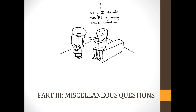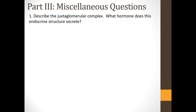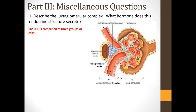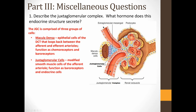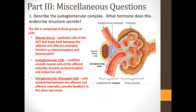Part 3, miscellaneous questions. Question 1: Describe the juxtaglomerular complex and what hormone it secretes. The juxtaglomerular complex is comprised of three groups of cells. The macula densa are epithelial cells of the DCT that loops back between the afferent and efferent arterioles of the glomerulus — they function as chemoreceptors and baroreceptors. The juxtaglomerular cells are modified smooth muscle cells located around the afferent arteriole — they function as baroreceptors and endocrine cells. The extraglomerular mesangial cells are sandwiched between the afferent and efferent arterioles and provide feedback between the other two areas. The juxtaglomerular cells are the cells that actually secrete the hormone renin.